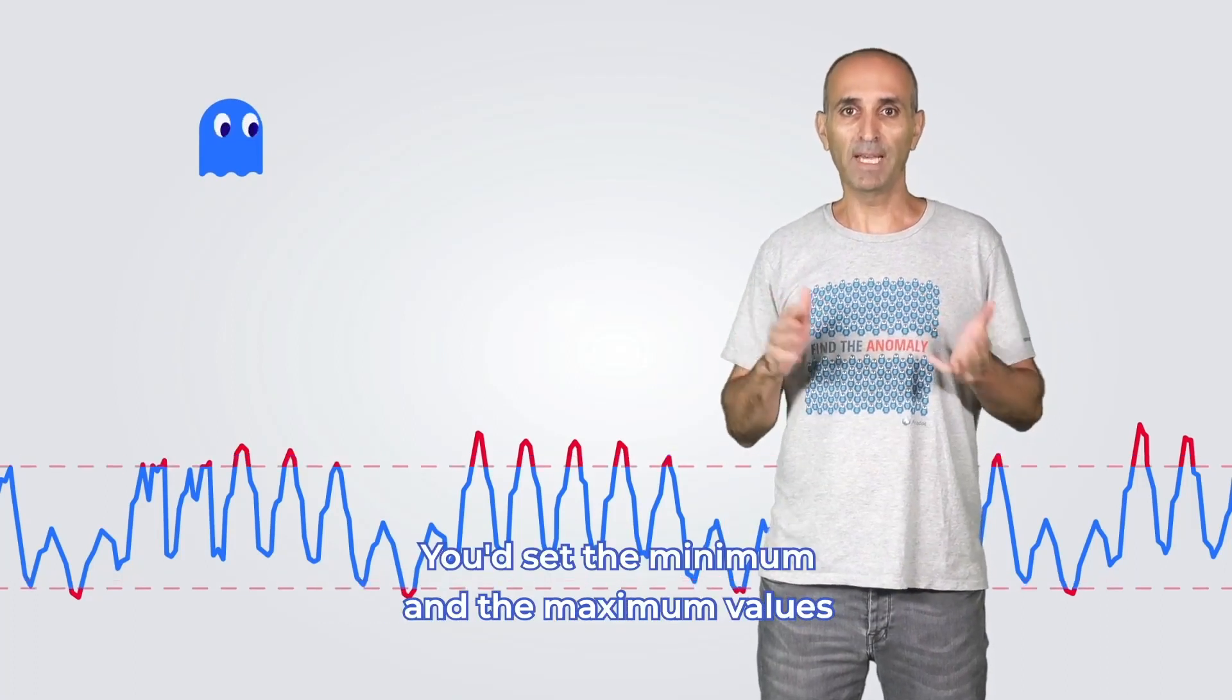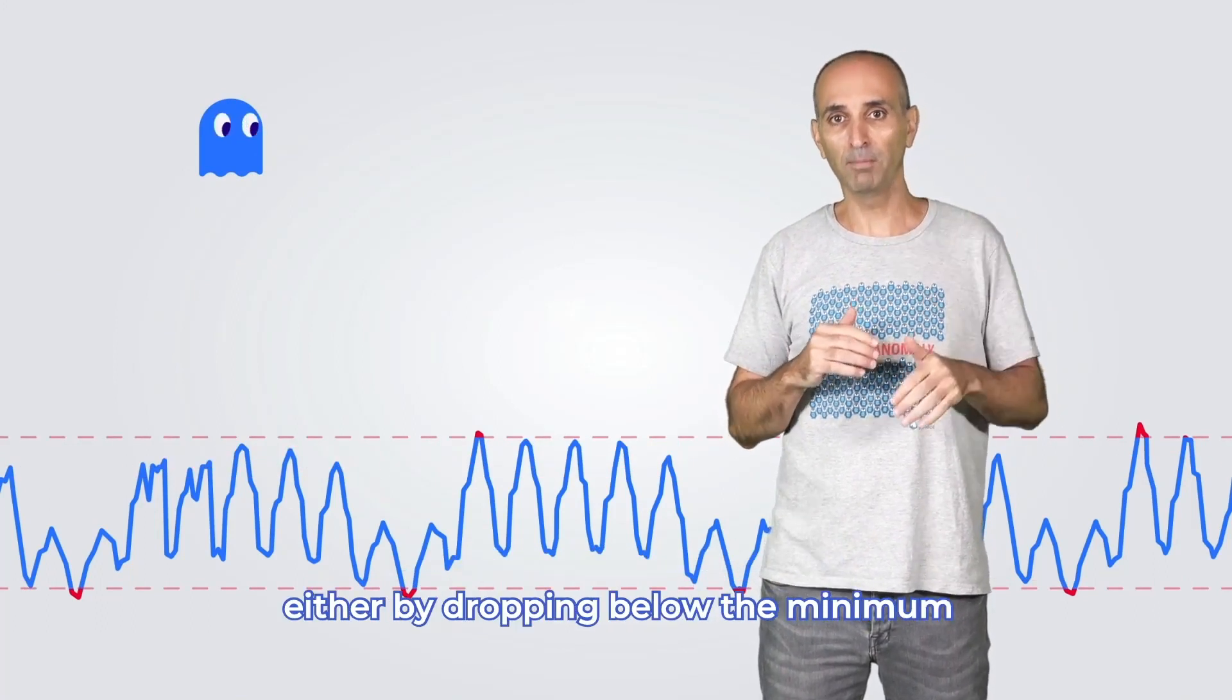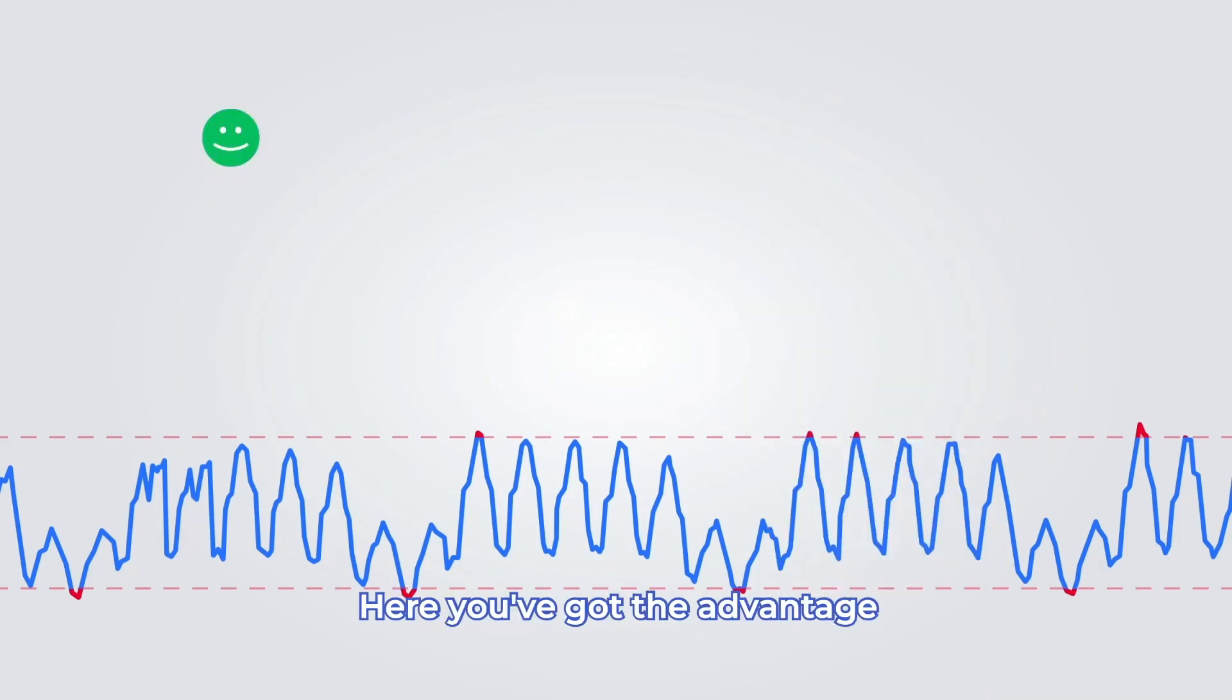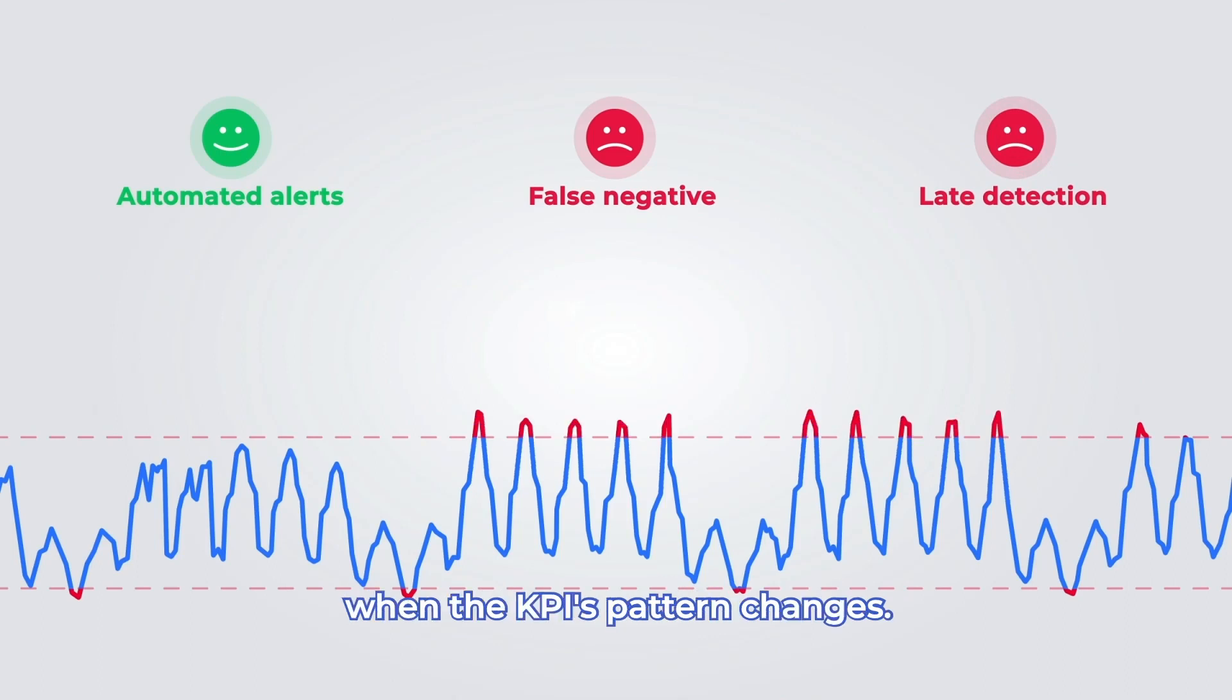You'd set the minimum and the maximum values and only get alerted when revenue exceeds those limits either by dropping below the minimum or exceeding the maximum. Here, you've got the advantage that your alerting is automated, but the disadvantage of false negatives or late detection. You would also get false positives when the KPI's pattern changes.